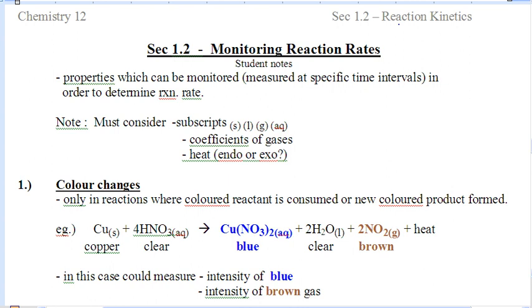So the change in amount and the seven things deal with the subscripts, solid, liquid, aqueous, and gas, we saw that yesterday, coefficients in front of the gases, and whether it's endo or exothermic. That's going to play a role in the rest of the chapter.